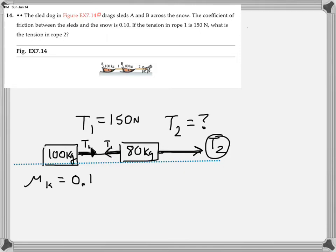The recipe is always to look at the forces acting on the objects of interest. I'm going to look at the forces acting on both sleds. Starting with the 100-kilogram one: it has a normal force F-sub-n1, its own weight Fg1, there is kinetic friction — F-sub-k — as a force going to the left because the sleds are moving to the right, and the other force is T1. That is the free body diagram for the 100-kilogram sled.